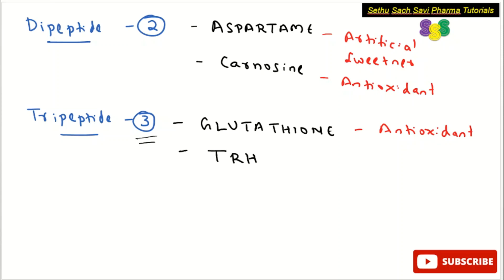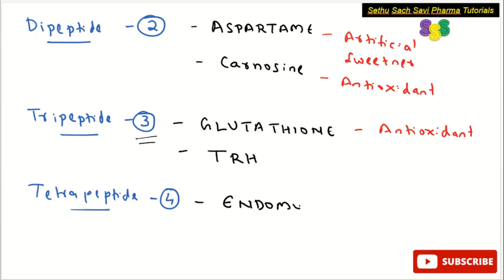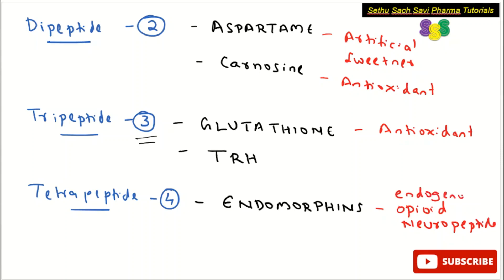Coming to tetrapeptide — the number of amino acids is four. The important example to remember is endomorphins, which are examples of tetrapeptides. Endomorphins are natural endogenous opioid neuropeptides — specifically endomorphin 1 and endomorphin 2 — made up of four amino acids, so they belong to the tetrapeptide category.